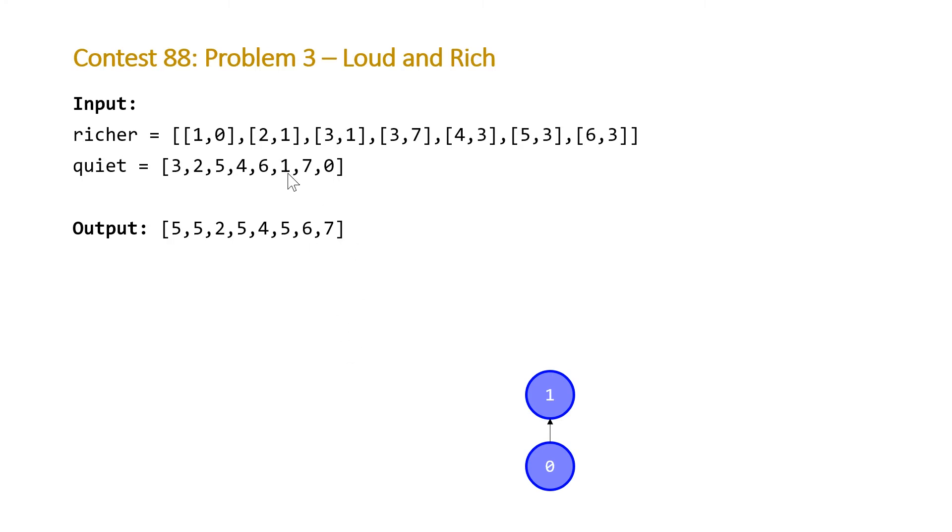We'll start by taking a look at the first element of our richer vector, which is one zero. This is saying that individual one has definitely more money than individual zero. So we can start with individual zero and then draw an arrow towards individual one. This means that one has more money than individual zero. If we take a look at our second element, we have two and one—that means that individual two definitely has more money than individual one. So we can add this individual with an arrow from one to two. From just the first two elements, we know three things: individual one has more money than individual zero, individual two has more money than individual one, and also individual two has more money than individual zero.